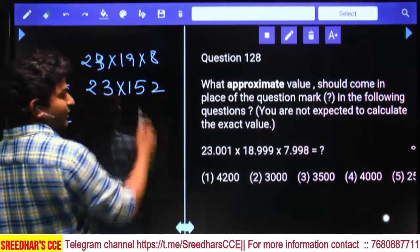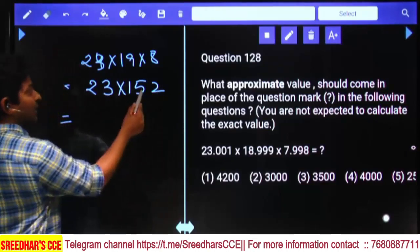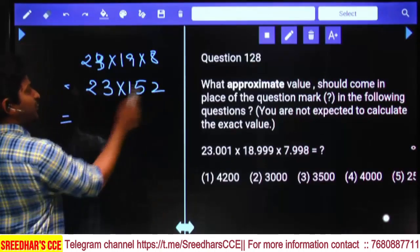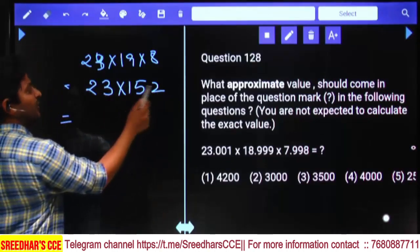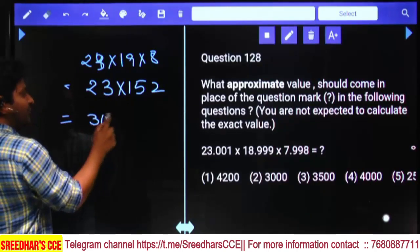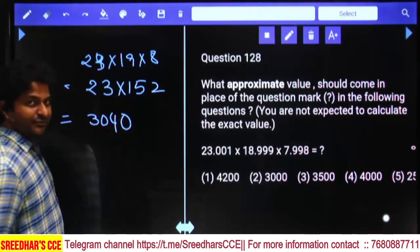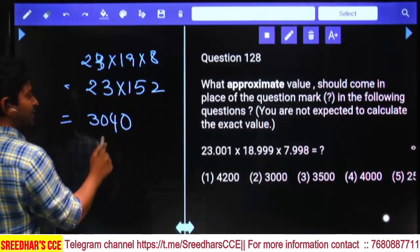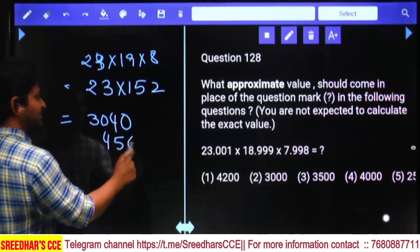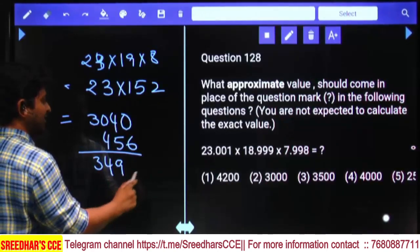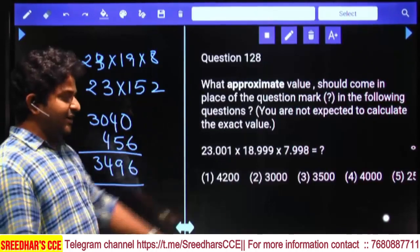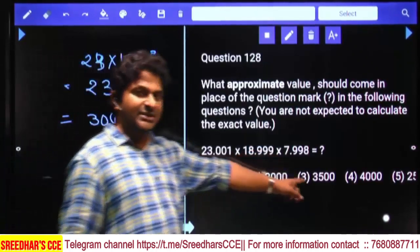Now 23 into 152. I'll take 152 times 20 plus 3 times. 152 times 2 is 304, times 20 is 3040. 152 times 3 is 456. Total is 3496, approximately third option.